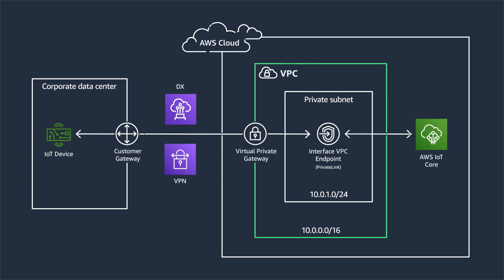AWS Direct Connect is a network service that provides an alternative to using the internet and enables customers to have low latency, secure, and private connection to AWS. Now that we have a reference pattern on how to do private connectivity to AWS IoT Core Data, let's go a little bit deeper to see how to do hybrid DNS resolution with Amazon Route 53 Resolver Endpoints.